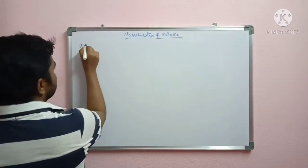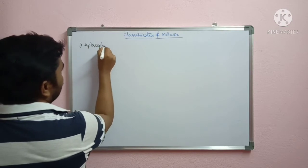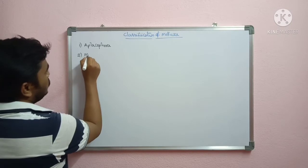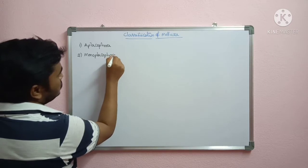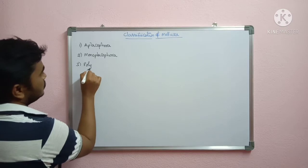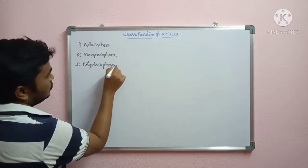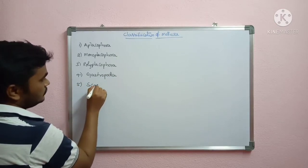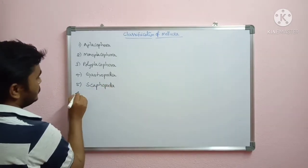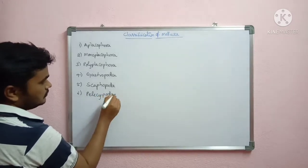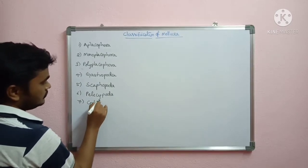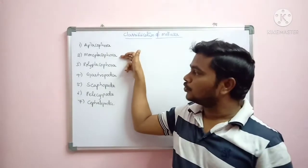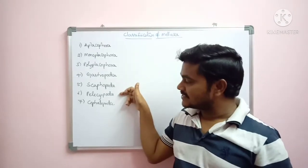The seven classes are: first, Aplacophora; second, Monoplacophora; third, Polyplacophora; fourth, Gastropoda; fifth, Scaphopoda; sixth, Pelecypoda; and seventh, Cephalopoda.